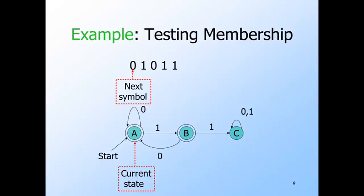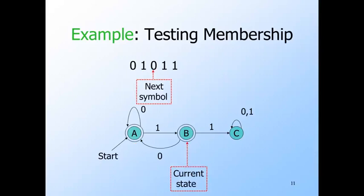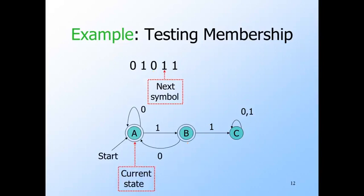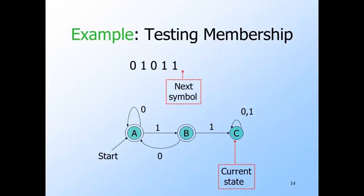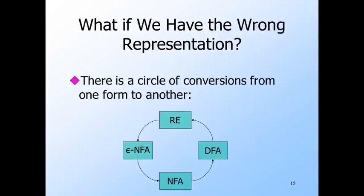Here is the DFA for strings without consecutive ones, which we've seen before. The input string is 0, 1, 0, 1, 1. That obviously has consecutive ones, so it shouldn't be accepted. When we simulate it: we read a zero, we stay in A; read a one, we go to B; read a zero, we go back to A; read a one, we go to B; read another one, we go to C. We see that indeed the string gets the automaton to state C, and it is not accepted.